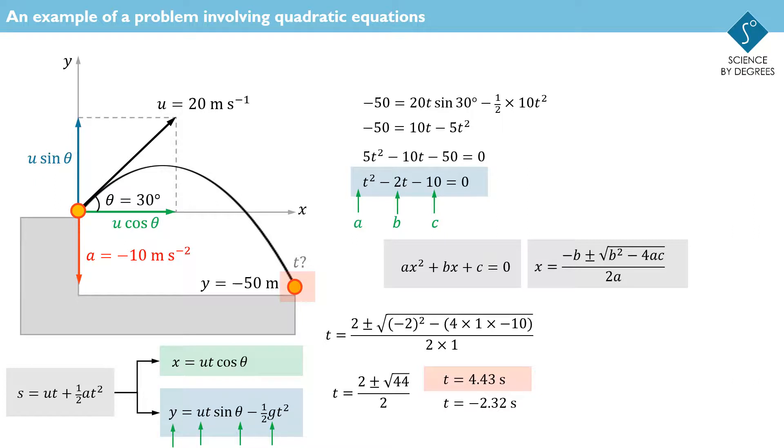The other solution still has a physical meaning, though. If you ran the video tape of the motion backwards and somehow removed the cliff, it would hit an altitude of minus 50 meters, 2.23 seconds, after passing through the starting point.